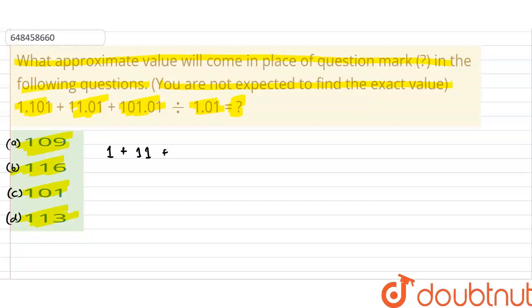11. Plus 101.01 approximate will be? 101. Divided by 1.01 approximate will be? 1, equals question mark.